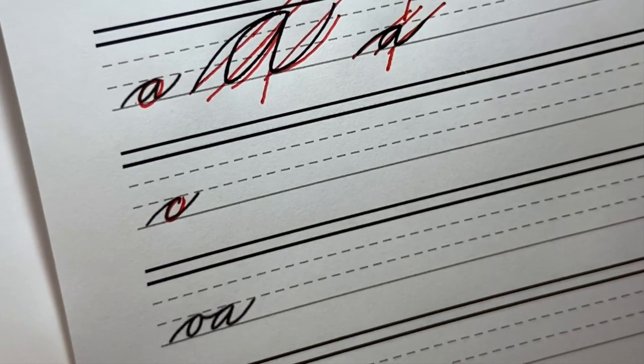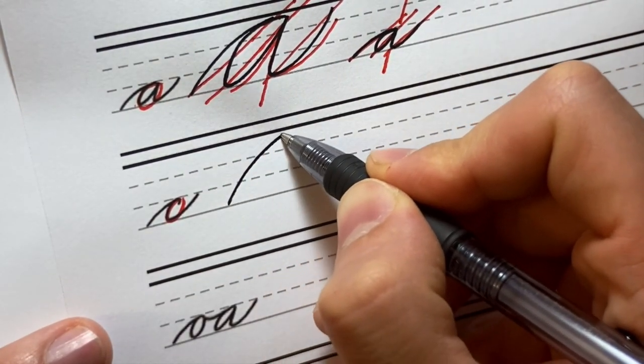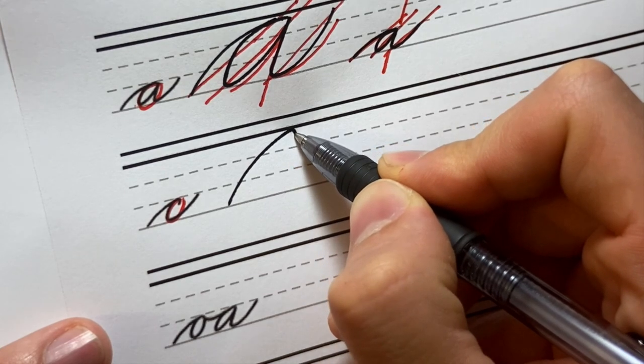Let's go on to the C. Do this one big as well. Coming in with an overturn, entry stroke again. Doing a little hook here.